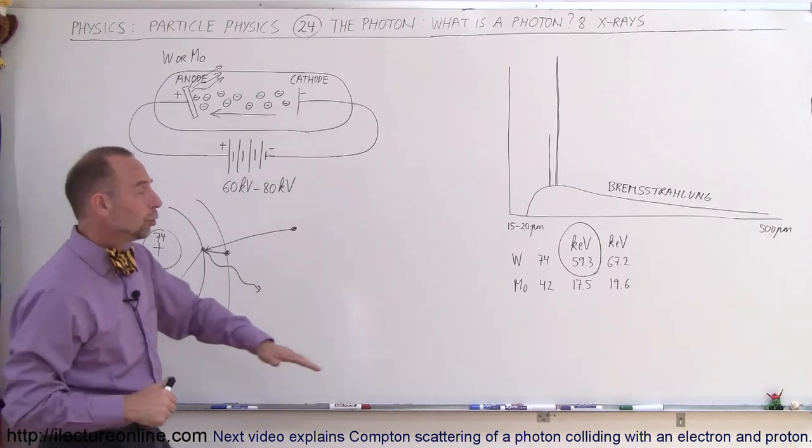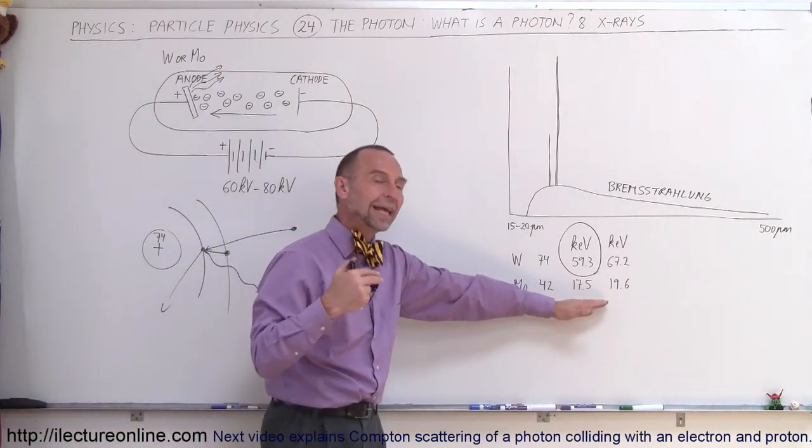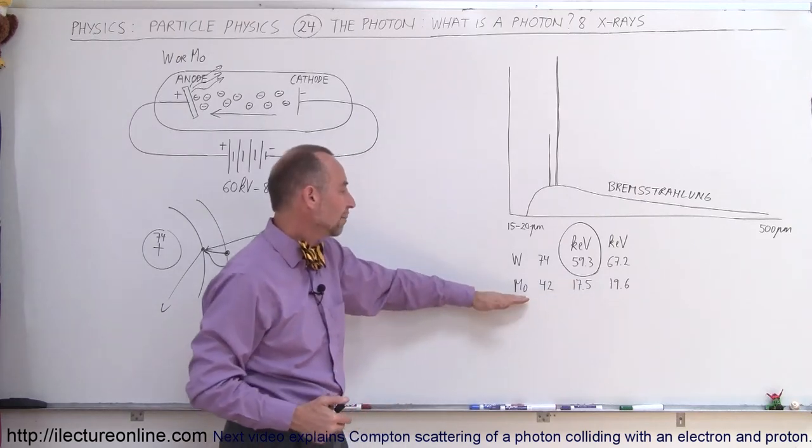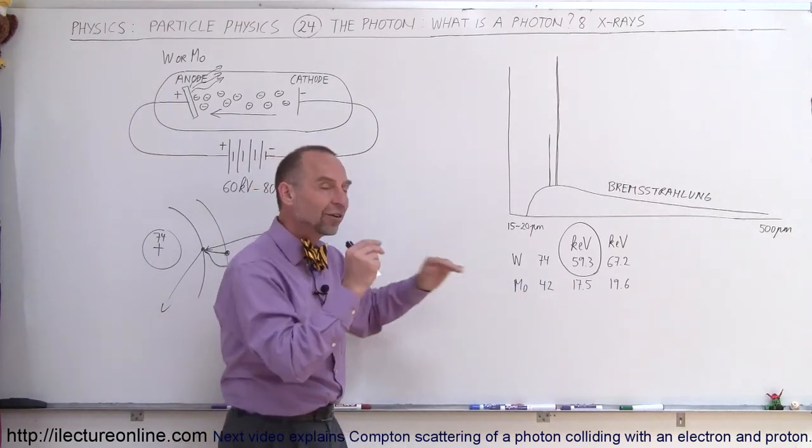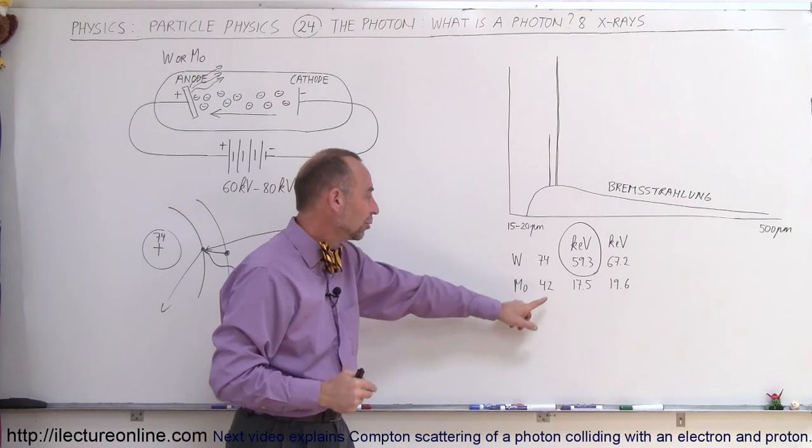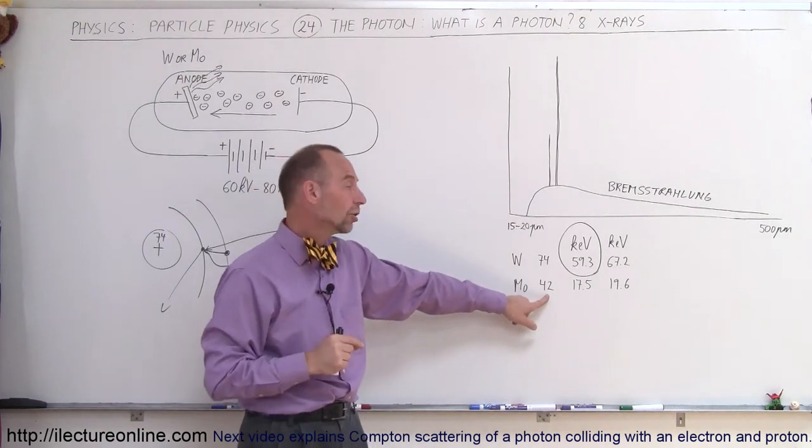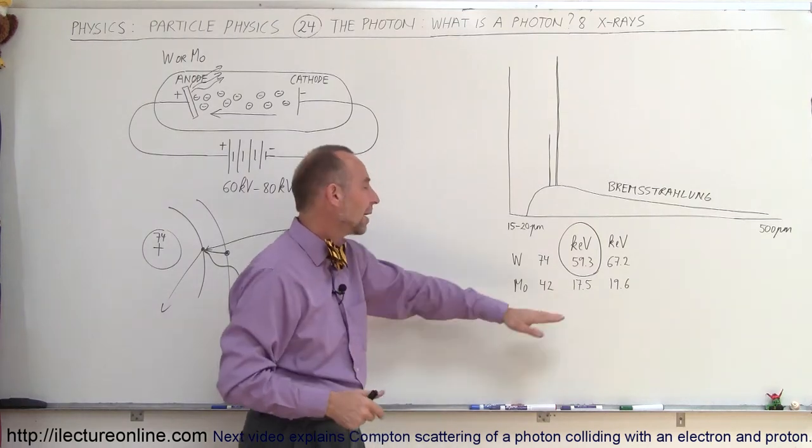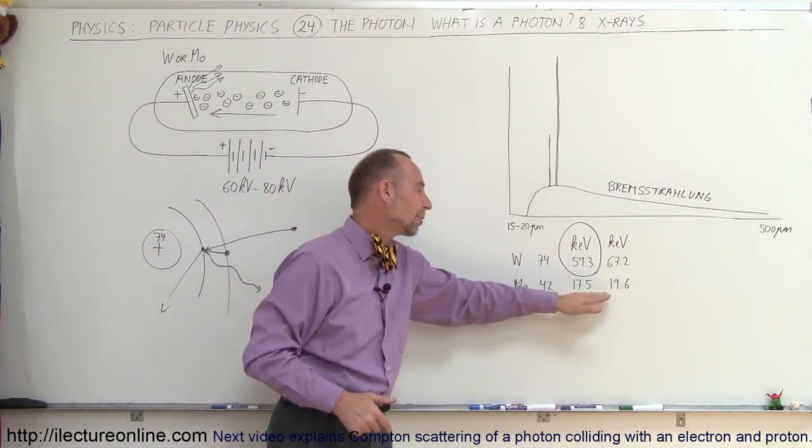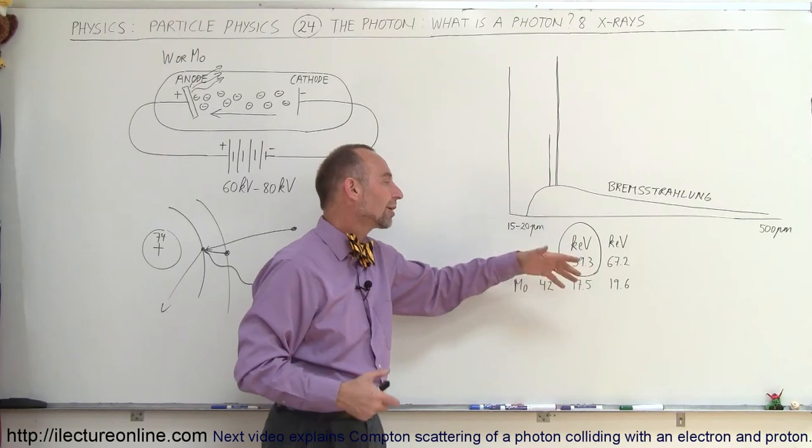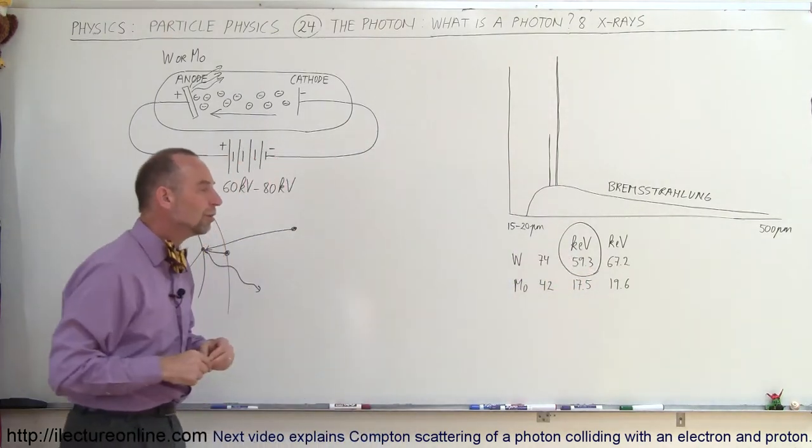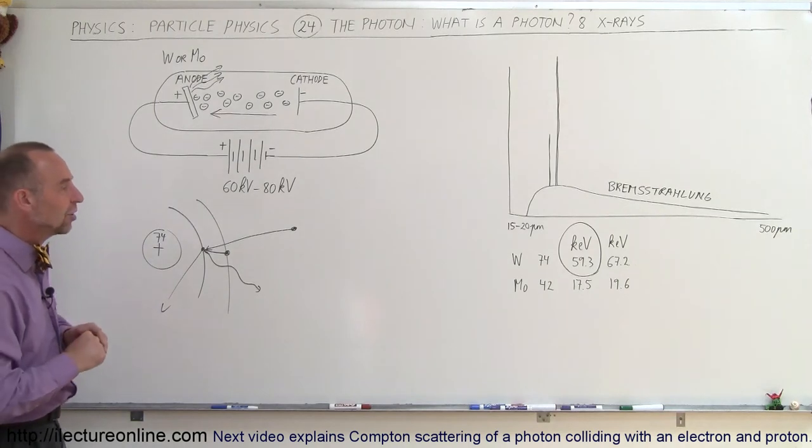Now, for low-dose x-rays or lower-energy x-rays that have much lower energies, we use a metal called molybdenum because there the energy differences aren't as high. Notice there's only 42 protons in the nucleus, and so therefore it produces less energetic x-rays and less damaging to the body. These are typically used for mammograms. These are used for other kinds of things such as taking pictures of bones.